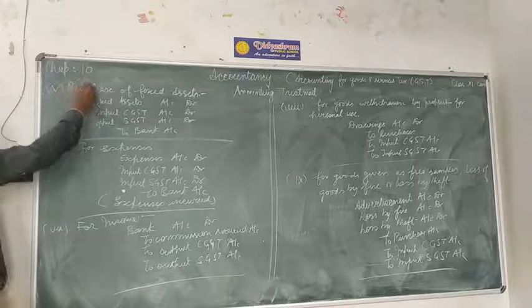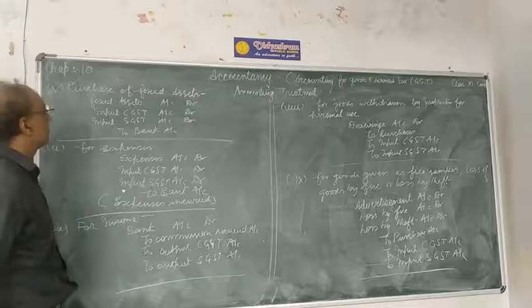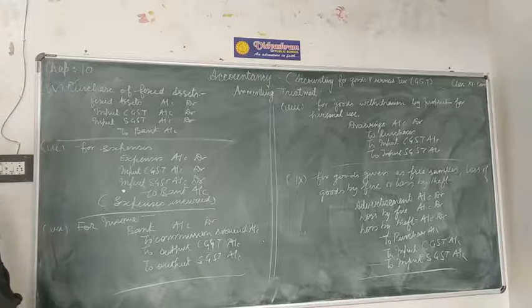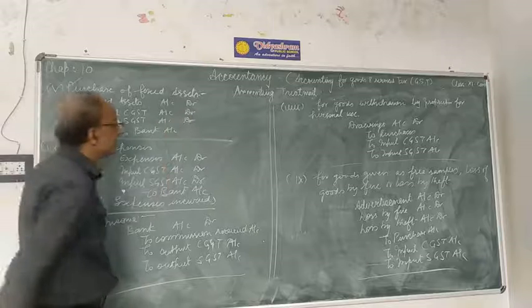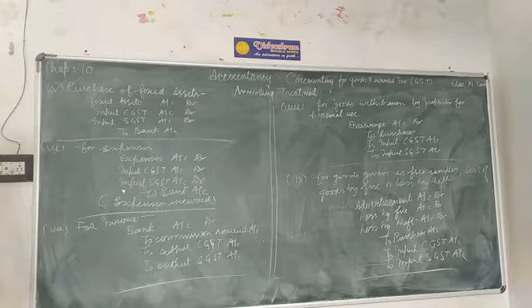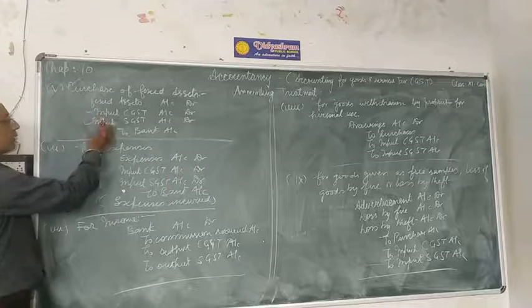Now the fifth entry is Purchase of Fixed Assets. When the assets are purchased, then the Fixed Assets account will be debited to the vendor. Now the next entry is the input CGST and SGST.